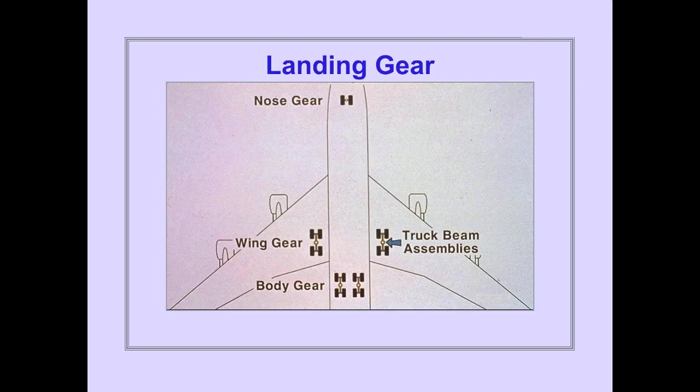The landing gear system consists of one nose gear with two wheels, and two wing gear and two body gear with four wheels each. The wing and body gear are mounted on truck beam assemblies.